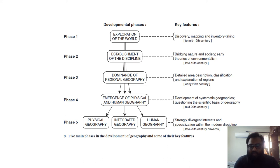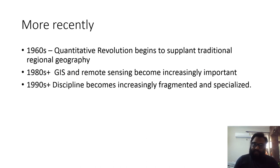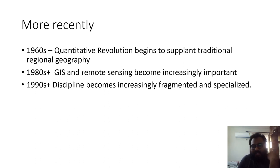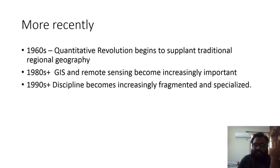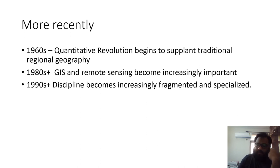The development of geography as a discipline is one of its most key phases and is still continuing. In the 1960s, the quantitative revolution started, where regional geography was expressed with numbers. Then in the 1980s, with the space age, remote sensing and GIS came into picture. Today we are moving towards specialized geography across various disciplines, with technology-driven elements continuously adding to the relevancy of the subject.